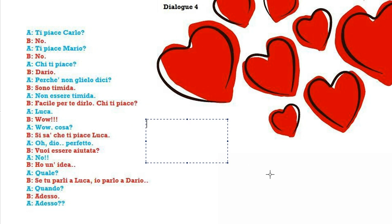Si sa che ti piace Luca. This is very important because this is the first time we see the impersonal si in action. Sa is the third person singular of the verb sapere — io so, tu sai, lui sa. We have si as subject and sa as the verb conjugated in the third person singular. When we use si as an impersonal particle, we mean people — everybody, no one in particular. So: everybody knows that you like Luca.